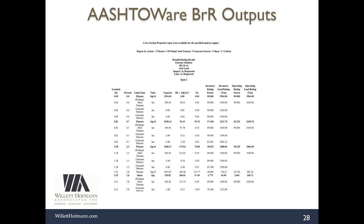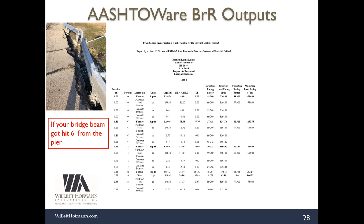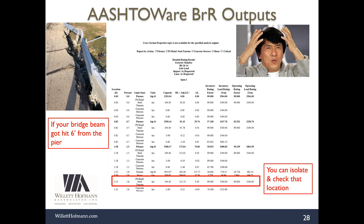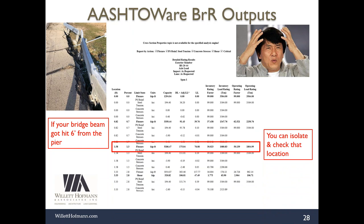This granular output is especially useful for real-time inspections. For example, if a bridge gets hit six feet from the pier and the railings and beams are damaged, you can isolate that portion, model it in AASHTOWare, and check whether it still meets capacity requirements. IDOT would want to see a detailed picture report and analysis for such an event. AASHTOWare's ability to give real-time results for localized damage makes it well-suited for these situations.